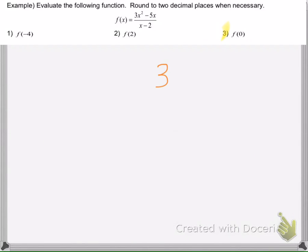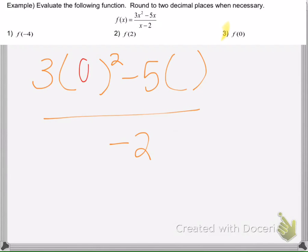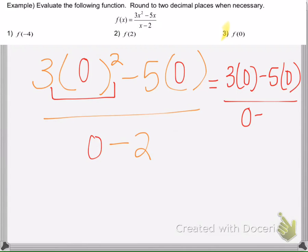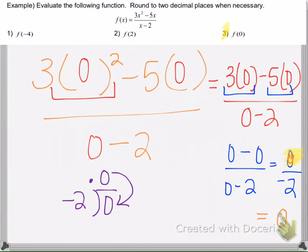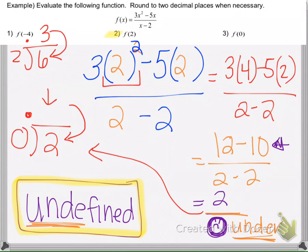For example 3, we replace x with 0. We do exponents first, then multiplication. We end up with 0 in the numerator, but that is okay — 0 divided by negative 2 is 0, because negative 2 times 0 is 0. So it is perfectly fine to have 0 in the numerator. It is not okay to have 0 in the denominator.